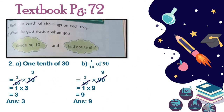In question number two, A: one tenth of 30. One tenth means one by ten, multiplied by 30. Ten is our bottom number and 30 is our upper number, so we have to divide 30 by 10. The answer is 3, then we multiply one with three, and the answer is three.